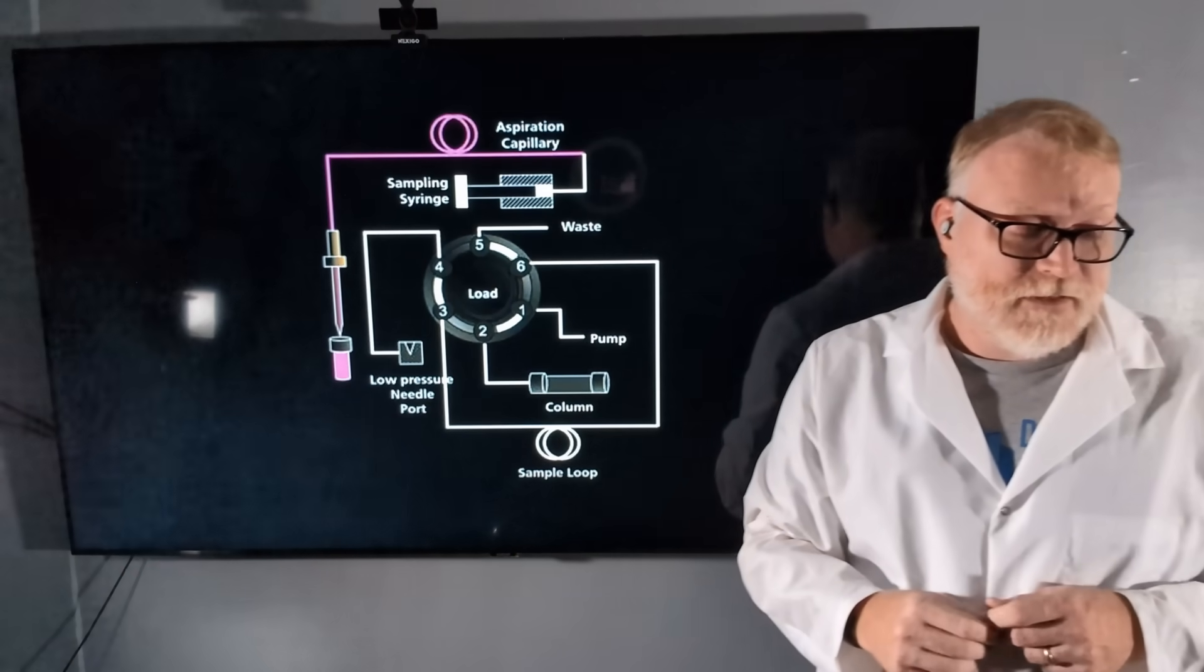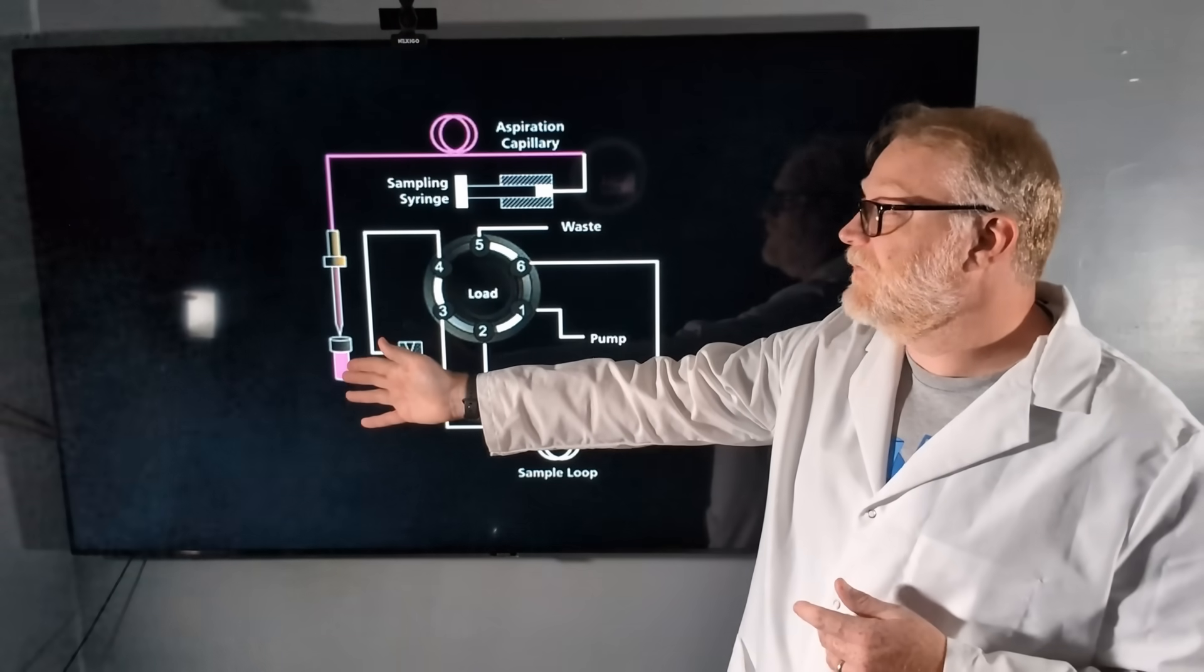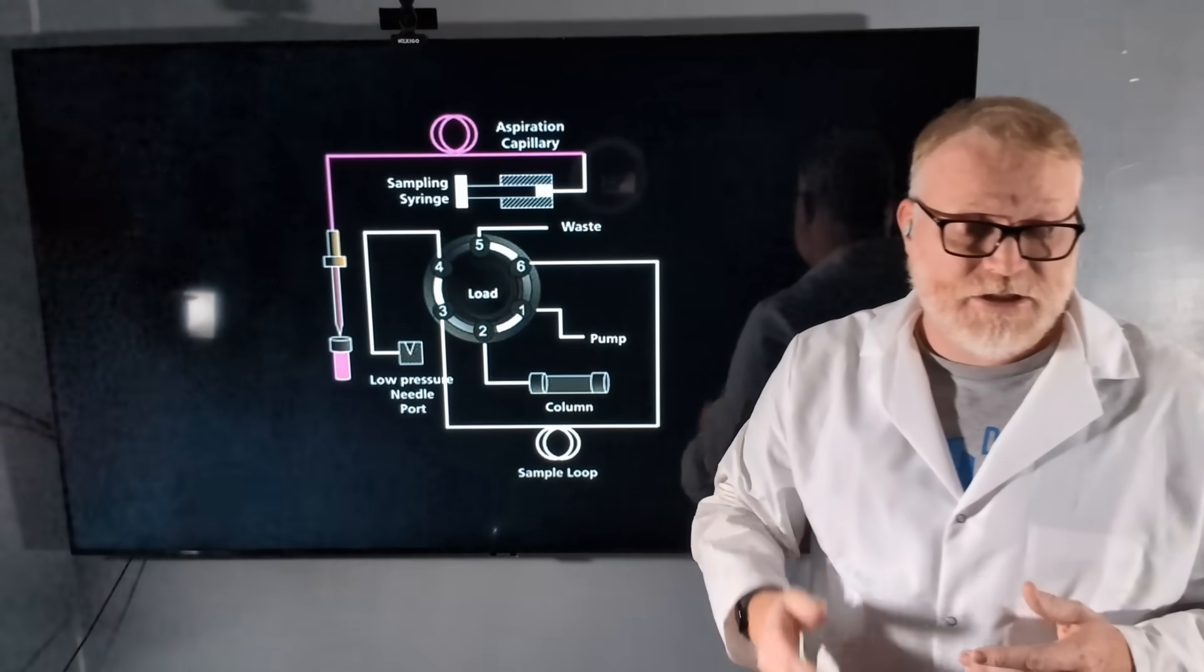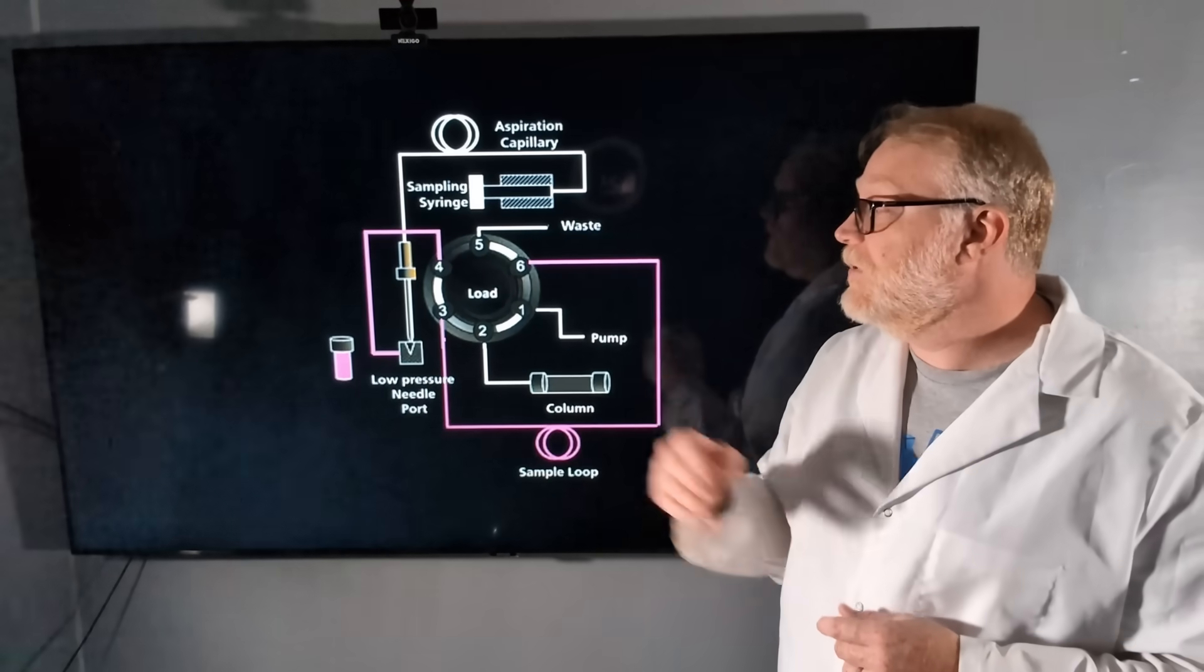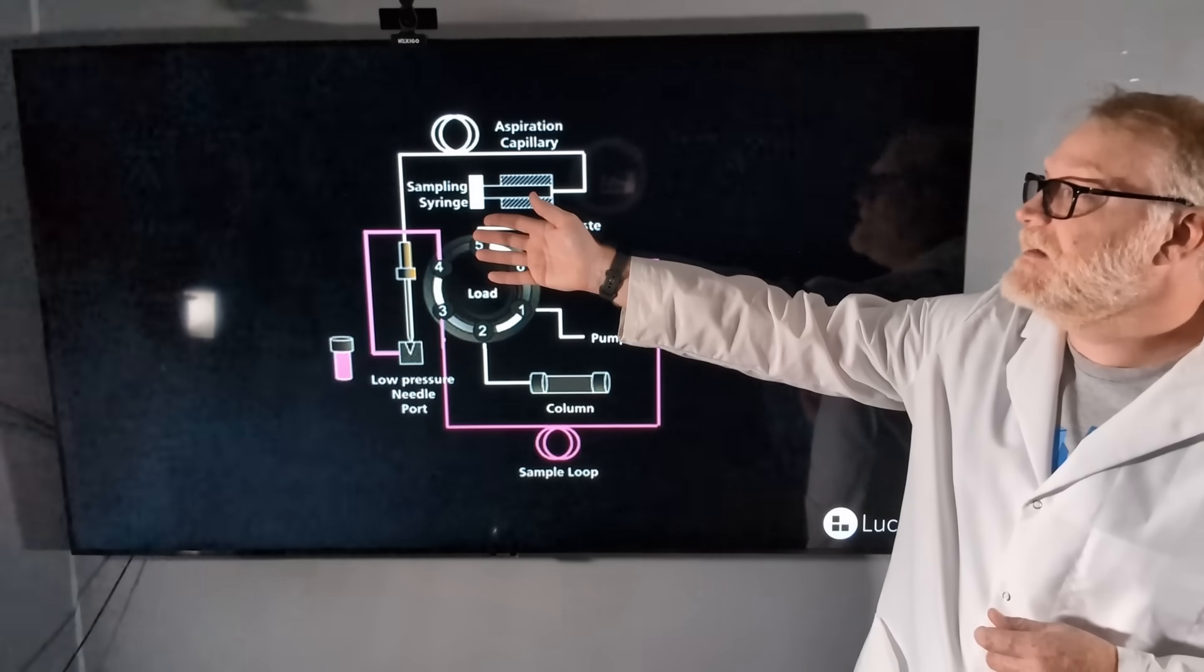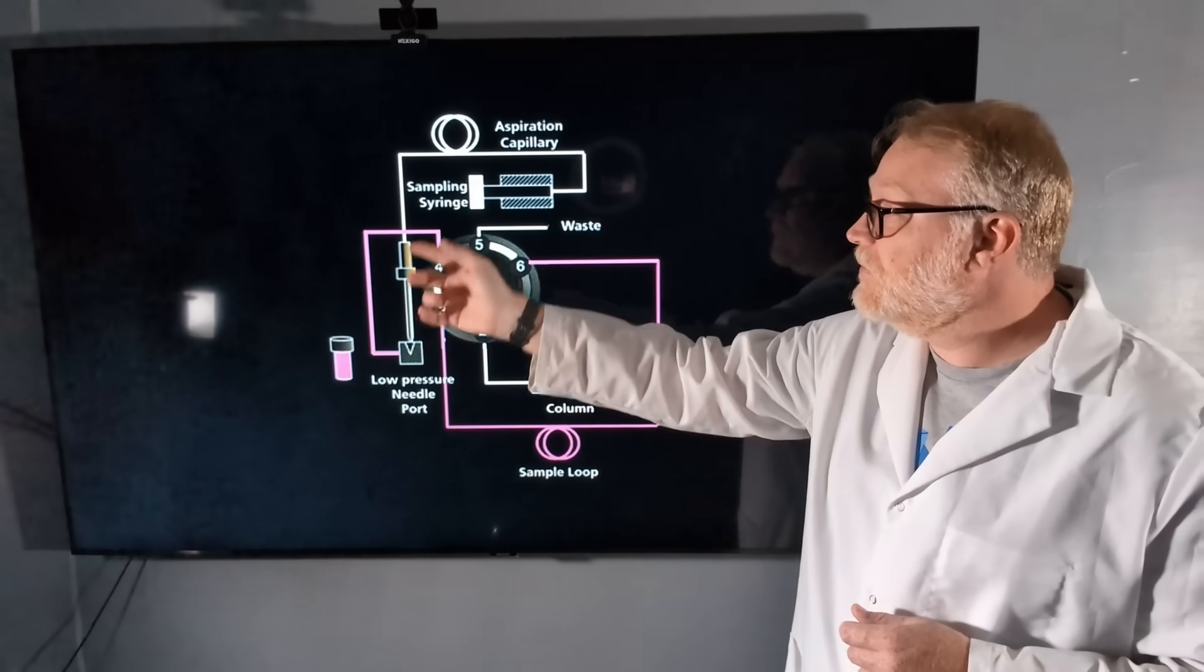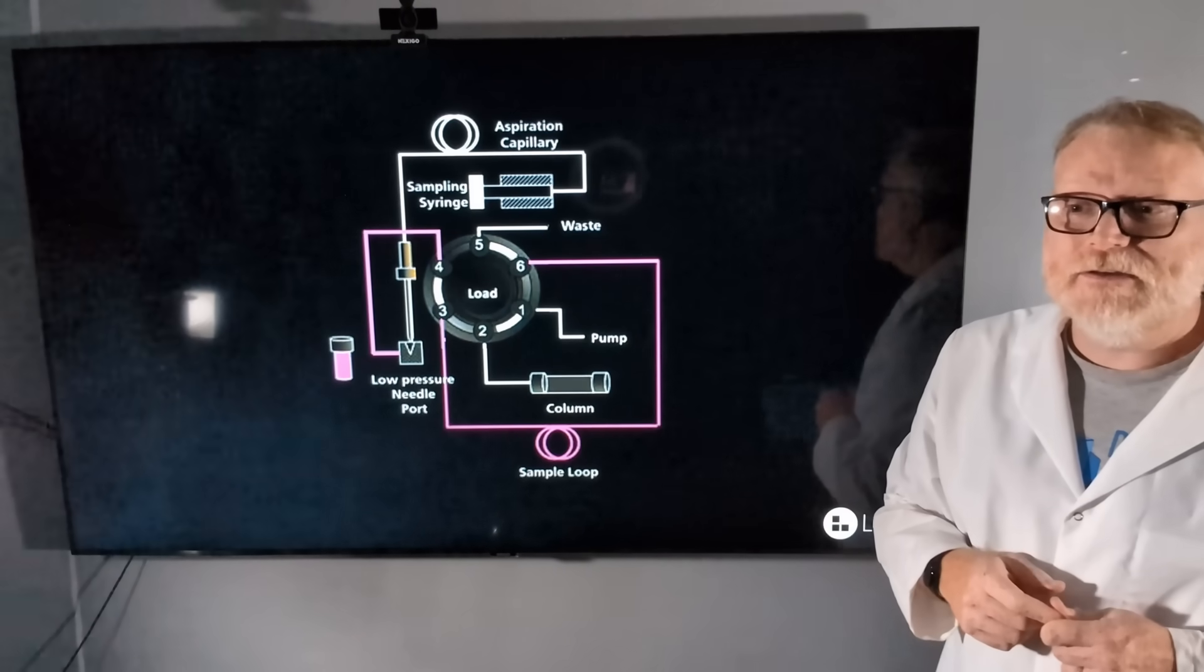When we start this up and we're pulling our sample, we're going to pull our sample from the vial into the aspiration capillary using our sampling syringe. Then we're going to move that needle into our low-pressure needle port using that same sampling syringe. We're going to push through the aspiration capillary, through our injection valve, into our sample loop.